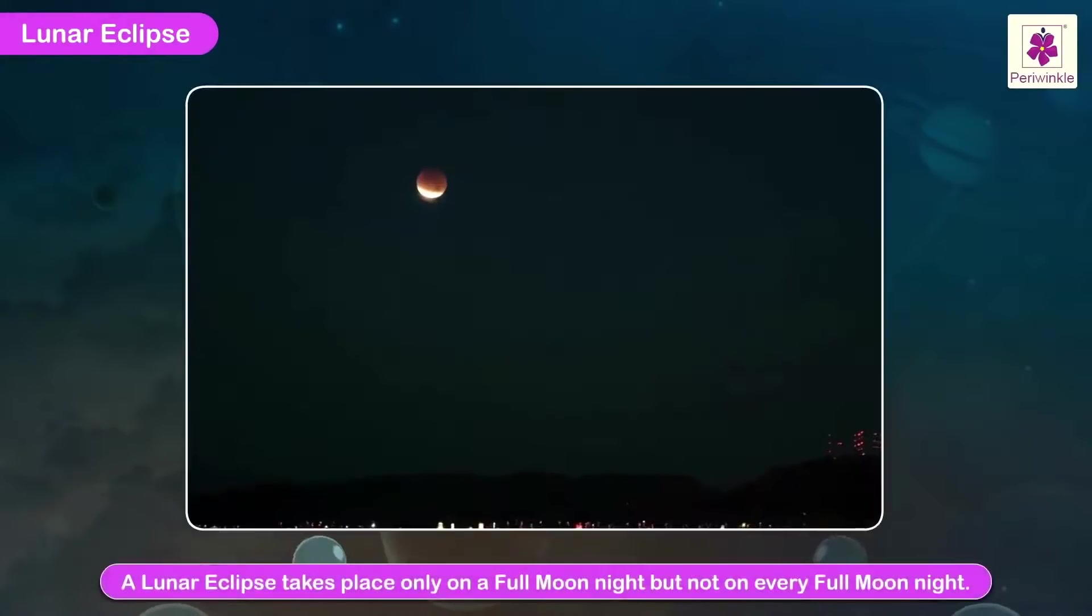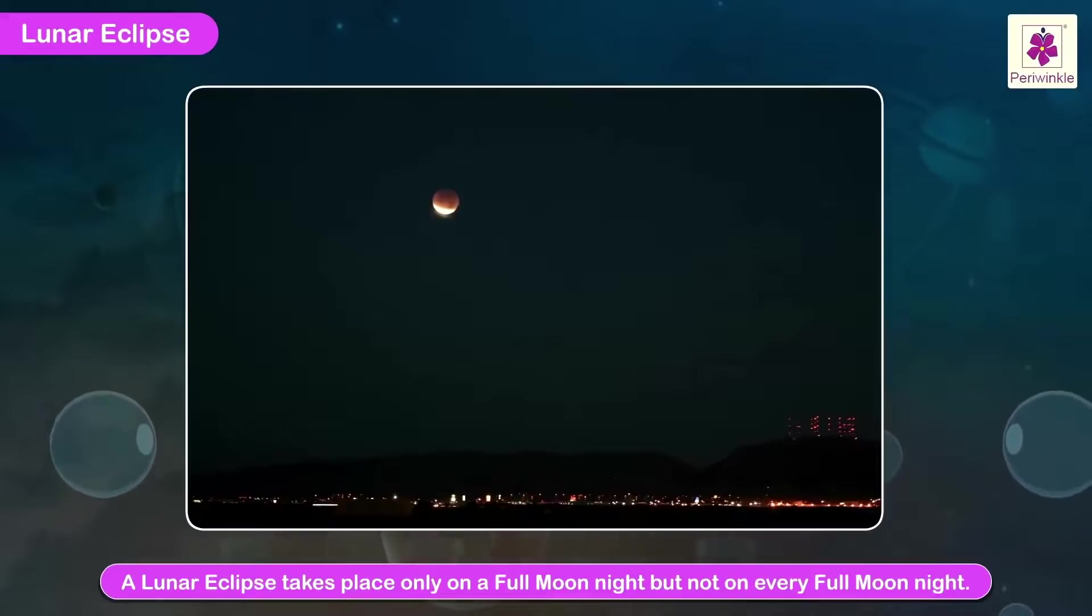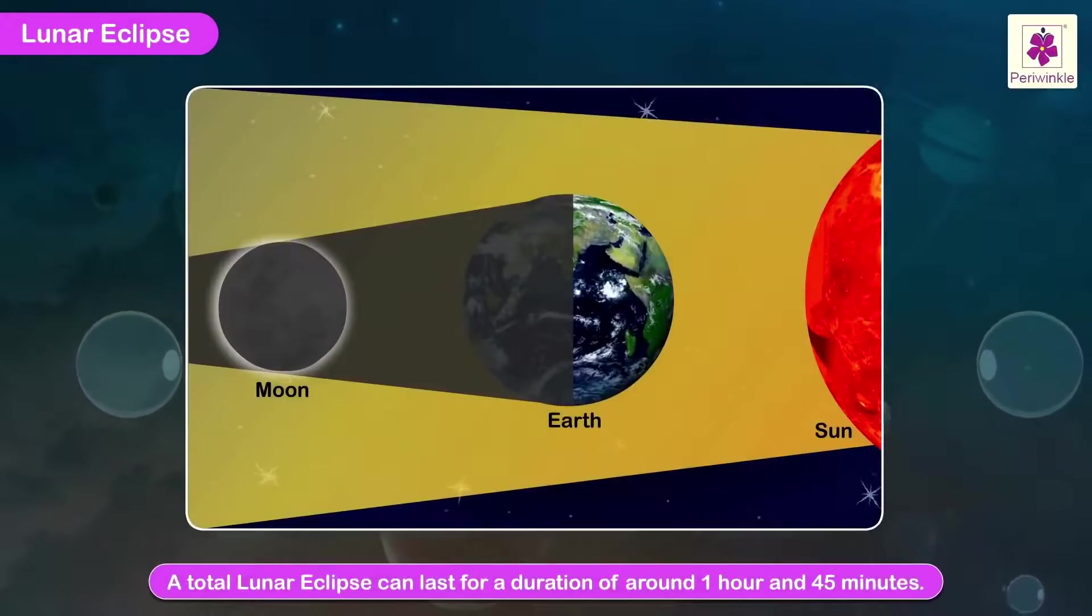A lunar eclipse takes place only on a full Moon night, but not on every full Moon night. A total lunar eclipse can last for a duration of around 1 hour and 45 minutes.